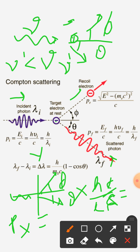Initially it was h upon lambda i, and after interaction, if we can see that momentum of electron is pe, then it will equal to pe component on this x-axis equal to pe cos phi plus h upon lambda f cos theta.